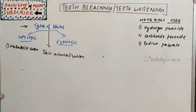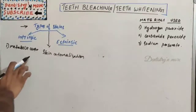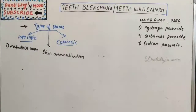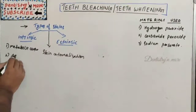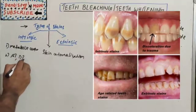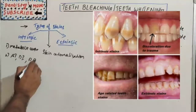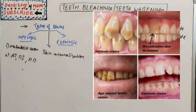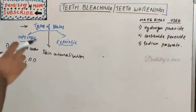Metabolic causes of intrinsic staining include alkaptonuria, congenital erythropoietic porphyria, and congenital hyperbilirubinemia. Inherited discolorations include amelogenesis imperfecta (AI), dentinogenesis imperfecta (DI), dentine dysplasia, vitamin D rickets, epidermolysis bullosa, and Ehlers-Danlos syndrome.